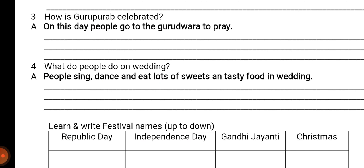Now write the spelling of these festivals up to down: R-E-P-U-B-L-I-C D-A-Y – Republic Day. I-N-D-E-P-E-N-D-E-N-C-E D-A-Y – Independence Day. G-A-N-D-H-I J-A-Y-A-N-T-I. C-H-R-I-S-T-M-A-S – Christmas.